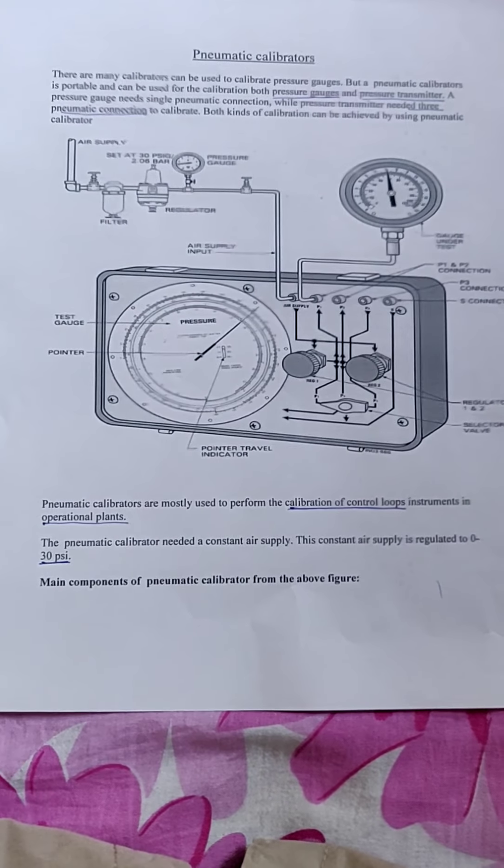P2 and P3 are the pneumatic transmitter calibrating points, and regulators 1 and 2 are the two regulators in which we can select the switch and then use the regulator. The selector switch is also there, as shown in the figure. This selector switch can be moved to the point at which the pressure gauge is connected. In this way, pressure gauge calibration through the pneumatic pressure gauge calibrator can be performed. It is very useful for industrial and laboratory purposes. That is all about pressure gauge calibration. Thanks.